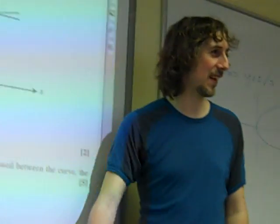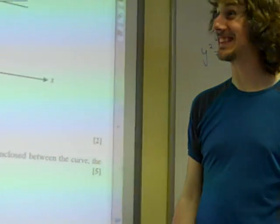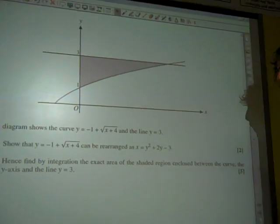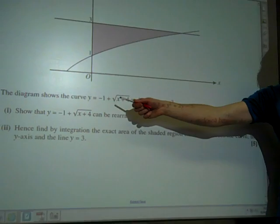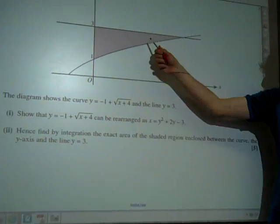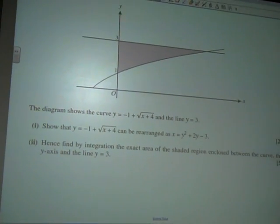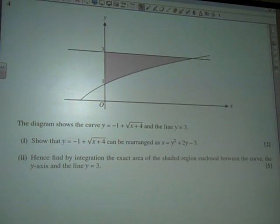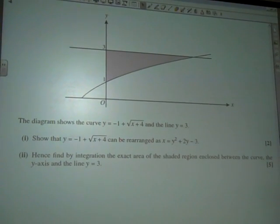OK, this is May 2011, question 4-2, question 4. The diagram shows the curve. Oh, it's written in terms of y equals a function of x, but we've got an area against the y-axis. The diagram shows the curve y equals -1 plus the square root of x+4, and the line y equals 3.